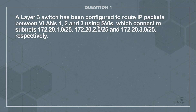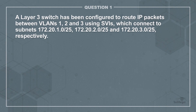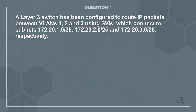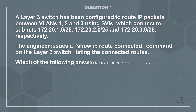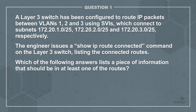Question 1. A Layer 3 switch has been configured to route IP packets between VLANs 1, 2, and 3 using SVIs, which connect to subnets 172.20.1.0/25, 172.20.2.0/25, and 172.20.3.0/25, respectively. The engineer issues a show IP route connected command on the Layer 3 switch, listing the connected routes. Which of the following answers lists a piece of information that should be in at least one of the routes?